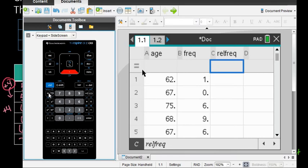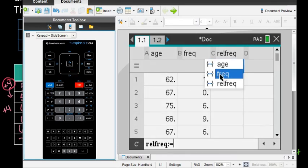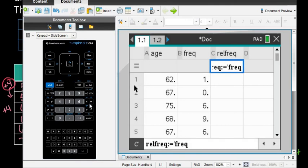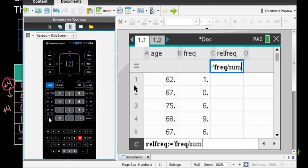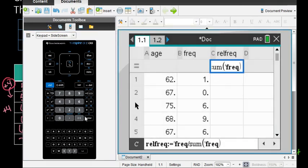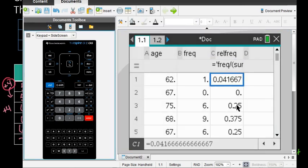For this one, it equals our variable of frequency divided by—you can either type in the sum of the frequency or just type in 24. Either gives you the same thing. Mine is set to give me decimals.